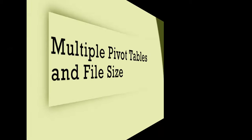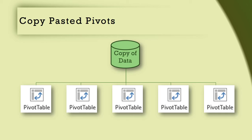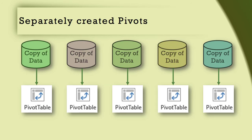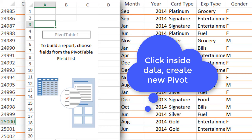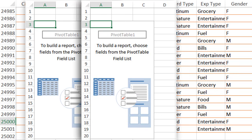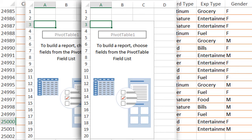This was about a single pivot table. What about multiple pivot tables? There are two ways of creating them. The most common is to create one pivot table and make copies of it with copy-paste — in this case all pivot tables work on a single copy of the raw data. If you click inside the raw data and create a new pivot table, that creates a new copy. As expected, adding one more fresh pivot table increases the file size by 0.5 MB to 2.5 MB.